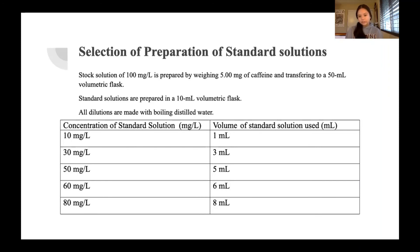For the standard solutions we decided to create 5 with the concentrations 10, 30, 50, 60, and 80 milligrams per liter. All the standard solutions will be prepared in a 10 milliliter volumetric flask. So for instance to prepare 10 milligrams per liter, 1 milliliter of the stock solution will be pipetted into the 10 milliliter volumetric flask and this will be diluted to the mark with boiling distilled water.